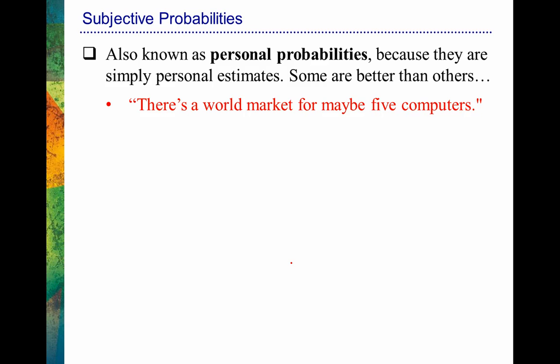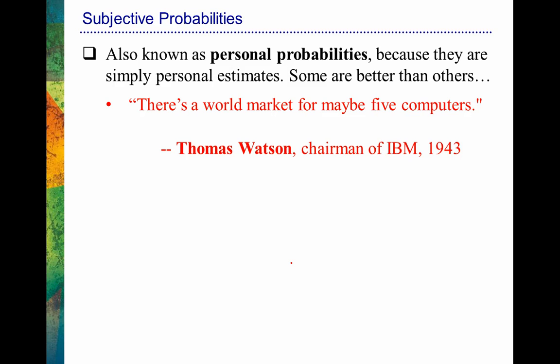Here are some examples of good and bad assessments of probability — some interesting quotes. Here's one: 'There's a world market for maybe five computers.' Obviously, we know that didn't work out to be true. This person was essentially saying the probability is very low that our company will sell computers. It's kind of interesting to learn this came from Thomas Watson, who at the time was the chairman of IBM. So he did not do a good job of assessing the probability of selling computers.